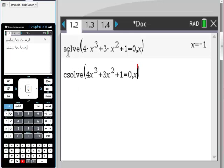Hit enter. I want you to, before I hit this, I want you to notice the two different functions I use. I use solve function here, which gave me just the real zeros. That's the one that we looked at on the graph. But if I use C solve, complex solve, it goes to that theorem of the exact number of zeros.